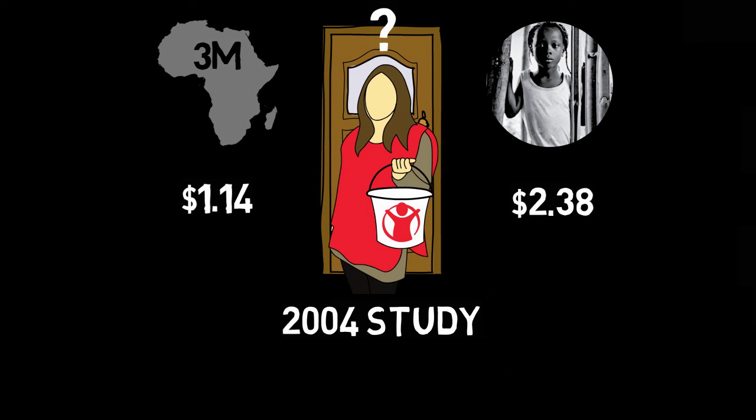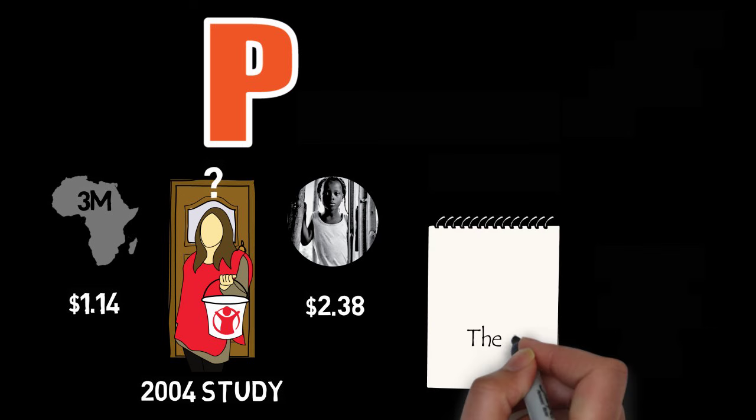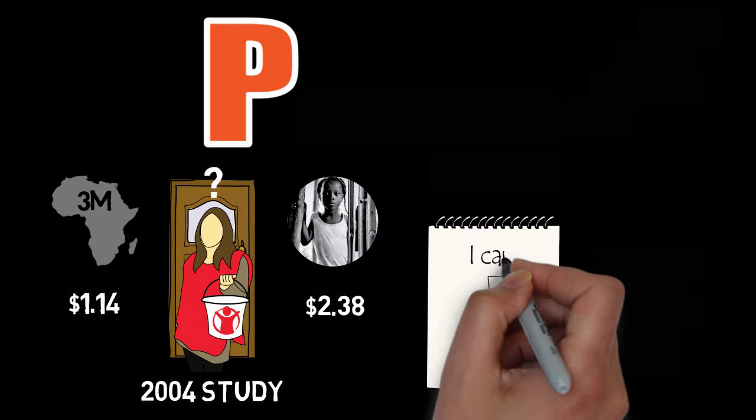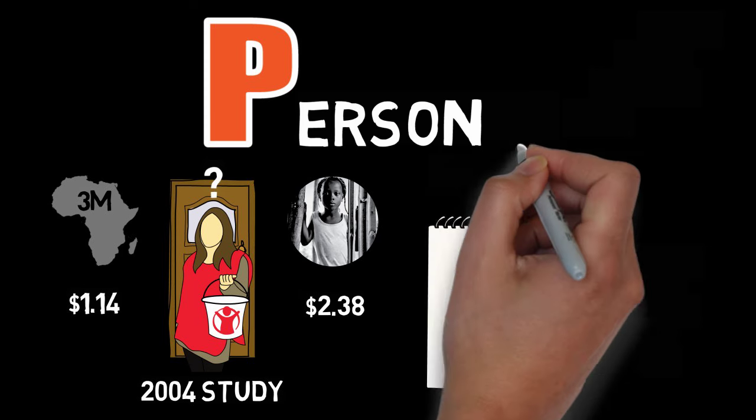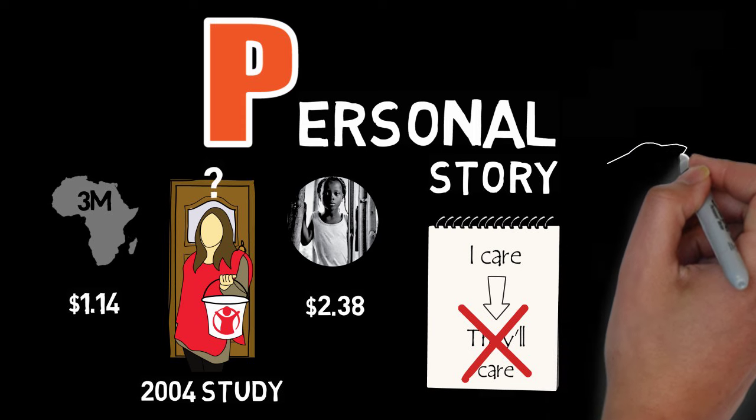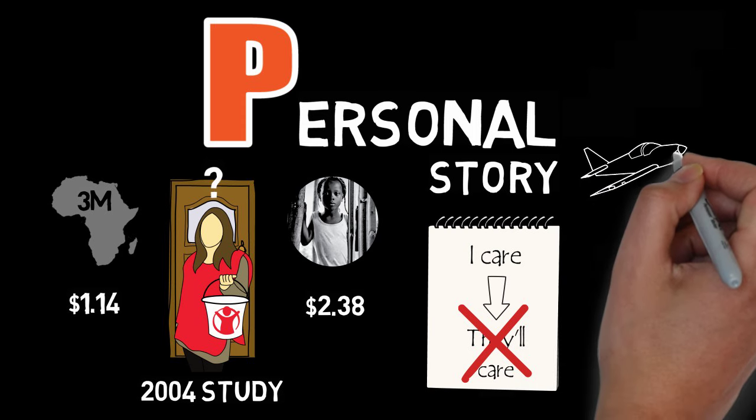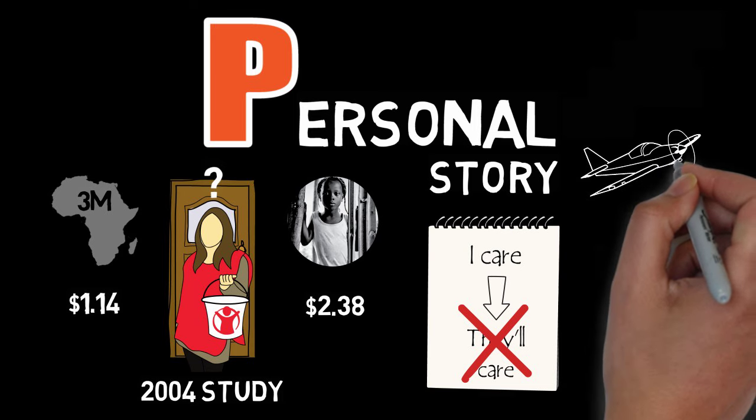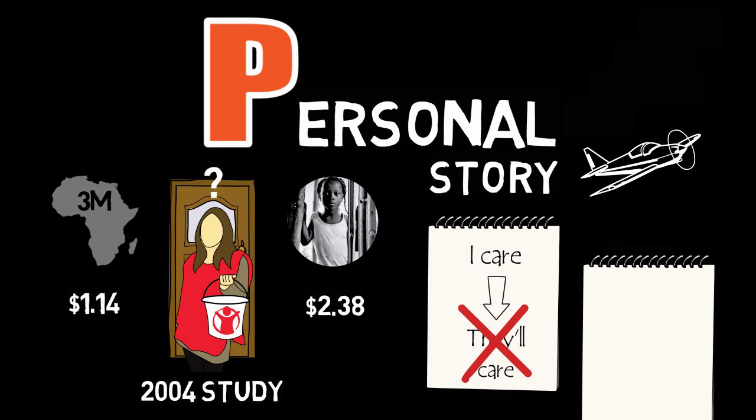The majority of the time you deliver a message, you're going to expect people to care about your message as much as you do, but they won't unless you tell a personal story. Personal stories are like flight simulators for the human mind. A personal story can allow someone to imagine themselves in the shoes of the main character in the story and feel what they're feeling. This is why more people donated when they heard the story of Rokia—those donors felt Rokia's pain and wanted to help.